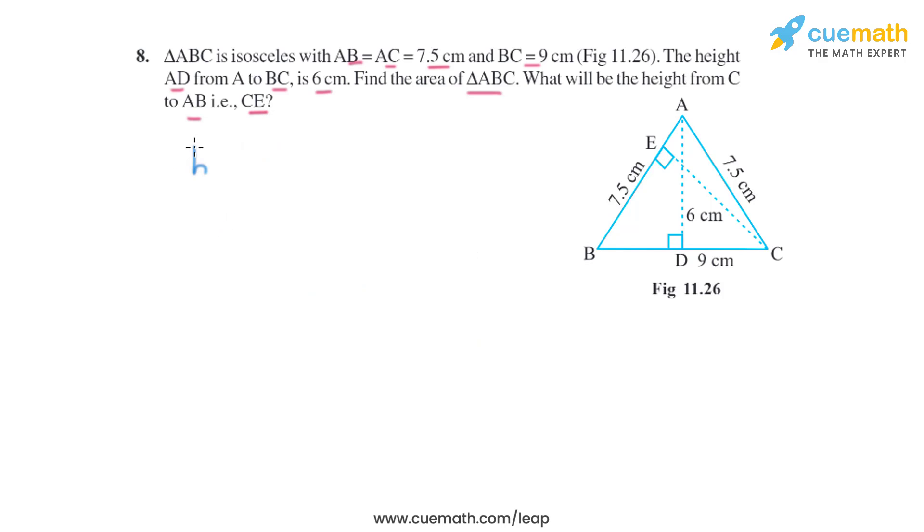So that will be the area of the triangle ABC. Now we will take the base as AB and the height as CE. And we know the area of triangle, area of triangle is half into base into height. So it will be half into B into H.